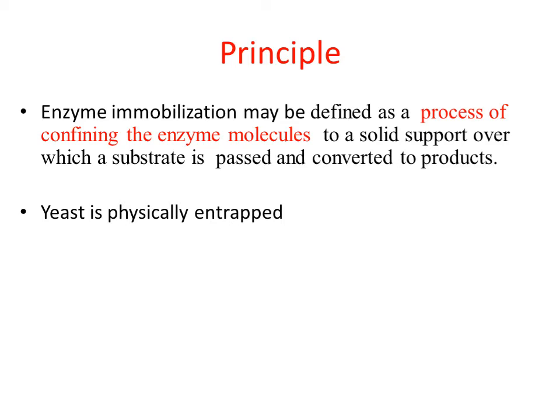Before we talk about how the yeast is immobilized, let us see the different methods of immobilization. We have two methods: physical method and chemical method. In physical method, we have adsorption method, entrapment method, microencapsulation method, and membrane confinement method. In chemical method, we have chemical bonding and cross linkage. In today's experiment, yeast is physically entrapped.